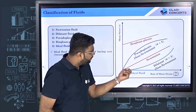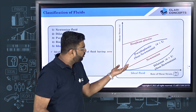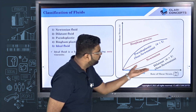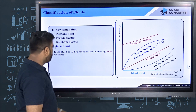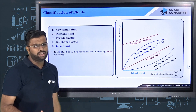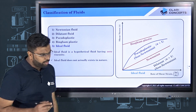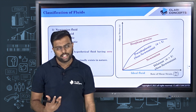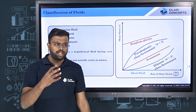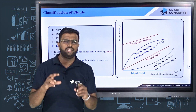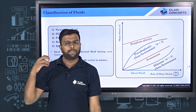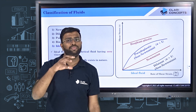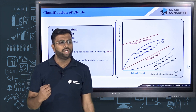This horizontal line represents that even without any shear stress applied, the fluid keeps on flowing. Ideal fluid does not really exist in nature, but we study it because in many engineering applications the viscous effects are very negligible compared to other forces, so we assume the fluid is inviscid.